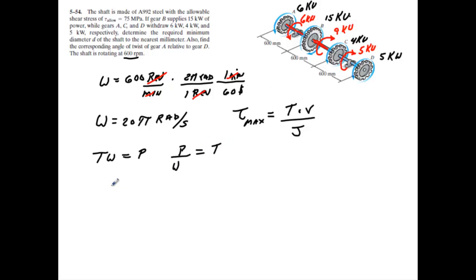Alright, so we take our power here, which is our 9 kilo, so 9 times 10 to the third. So we'll divide that by 20 times pi. That'll give us our max torque. I'll grab the calculator real quick, run that number. 9 times 10 to the third, divided by 20 times pi. Gives me 143.24. And that'll be newtons times meters. Okay, so that's our maximum torque here.